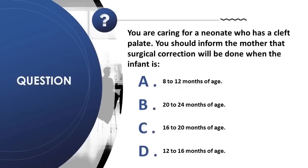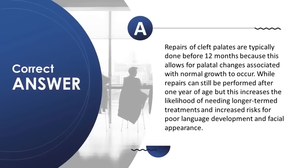Question 2: You are caring for a neonate with a cleft palate. Surgical correction will be done when the infant is: A) 8 to 12 months, B) 20 to 24 months, C) 16 to 20 months, D) 12 to 16 months. Correct answer is A. Repairs are typically done before 12 months to allow for palatal changes with normal growth. Repairs after one year increase likelihood of needing longer treatments and risks of poor language development and facial appearance.